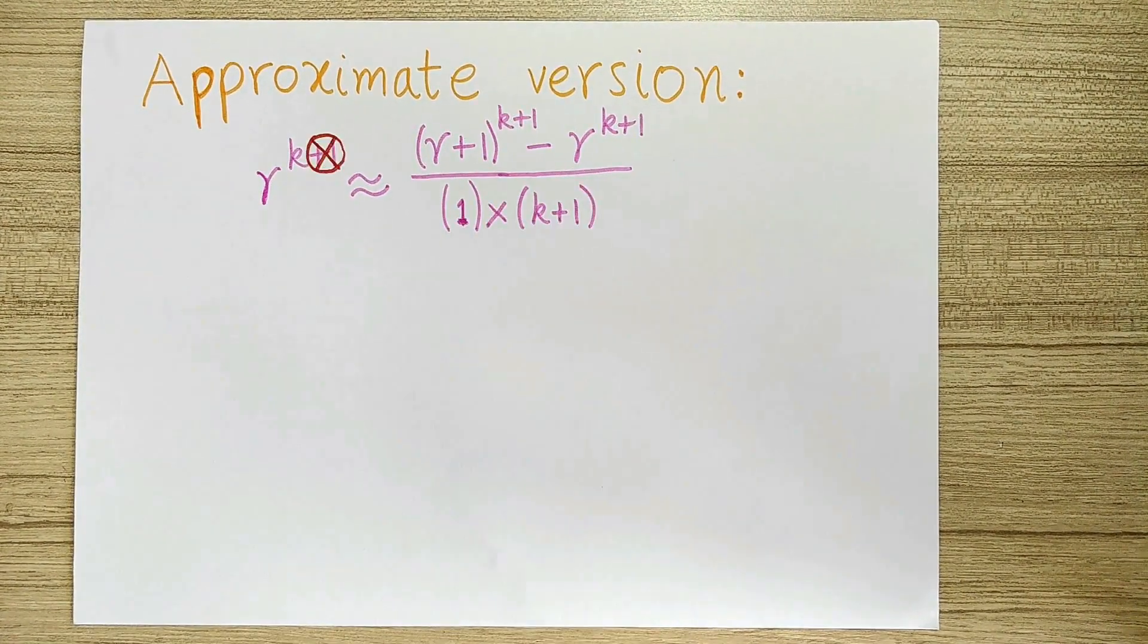If we use the binomial theorem to expand r plus 1 to the k plus 1 and then neglect all the terms which have a power of r less than k, then we get an expression for r to the k which is very similar to the one which we got previously for r over m to the k.